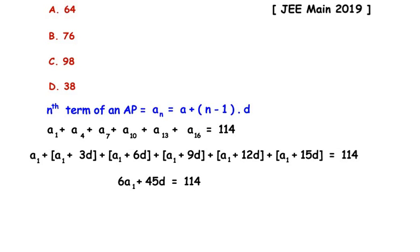Now 6, 45, and 114 all go in the table of 3, so we can divide all the terms by 3. This expression reduces as 2a1, since 3 goes 2 times in 6, plus 15d since 3 goes 15 times in 45,